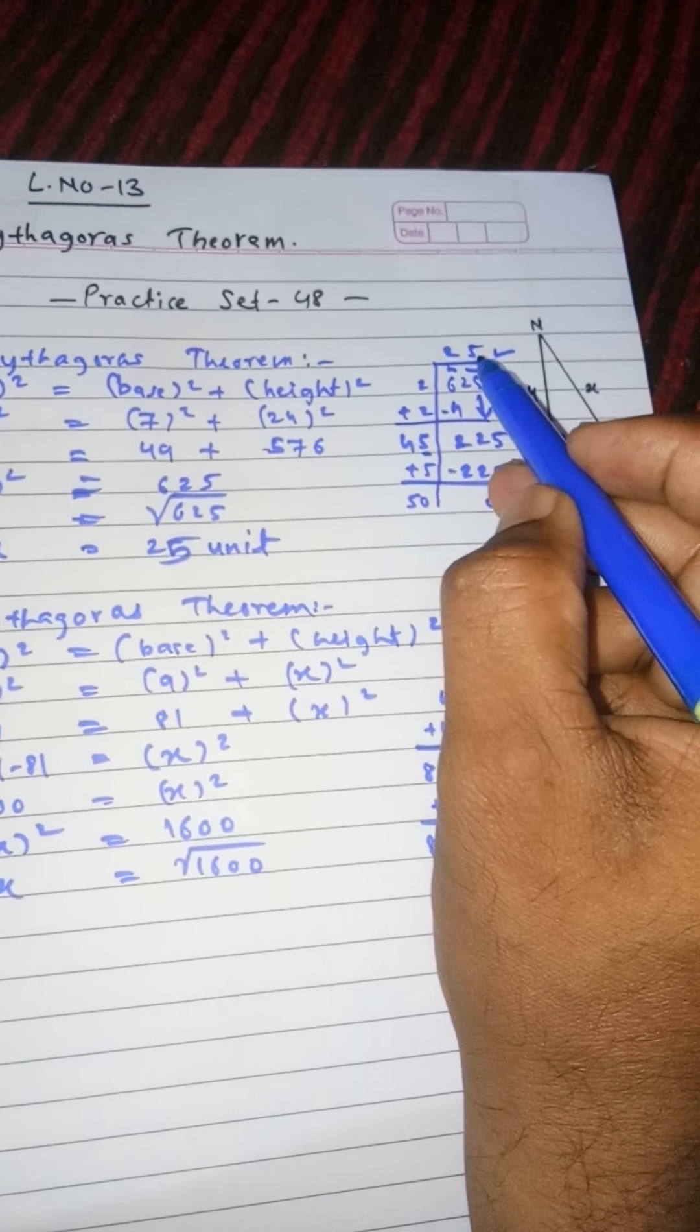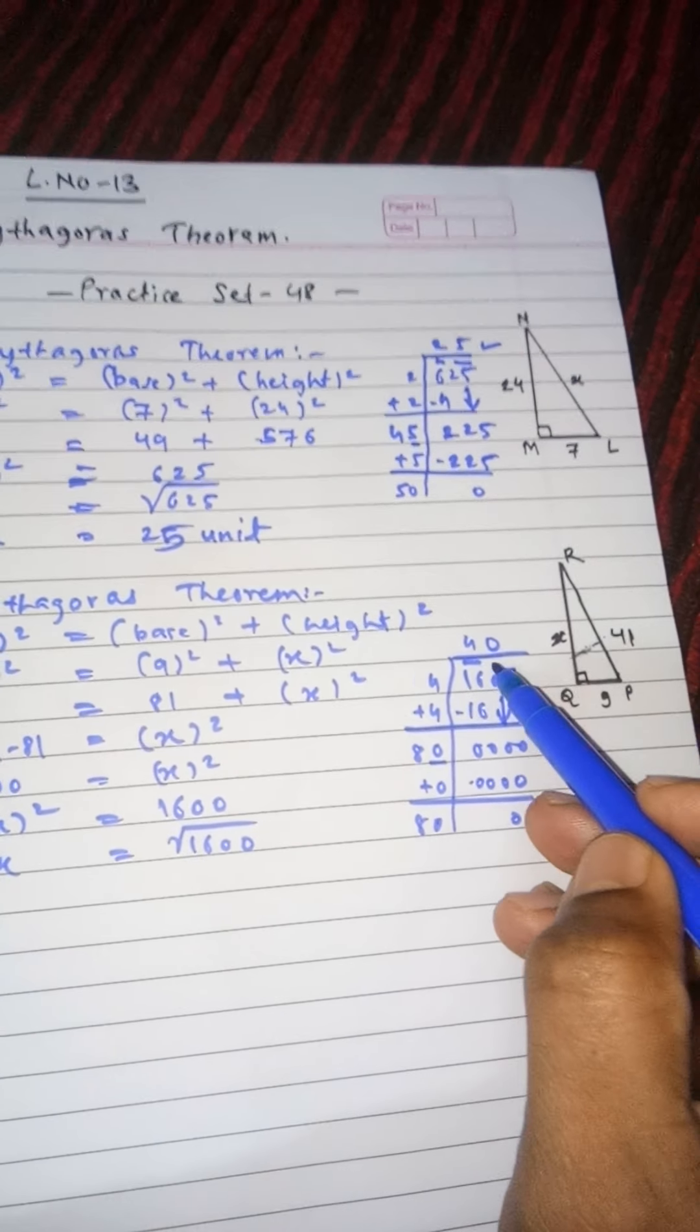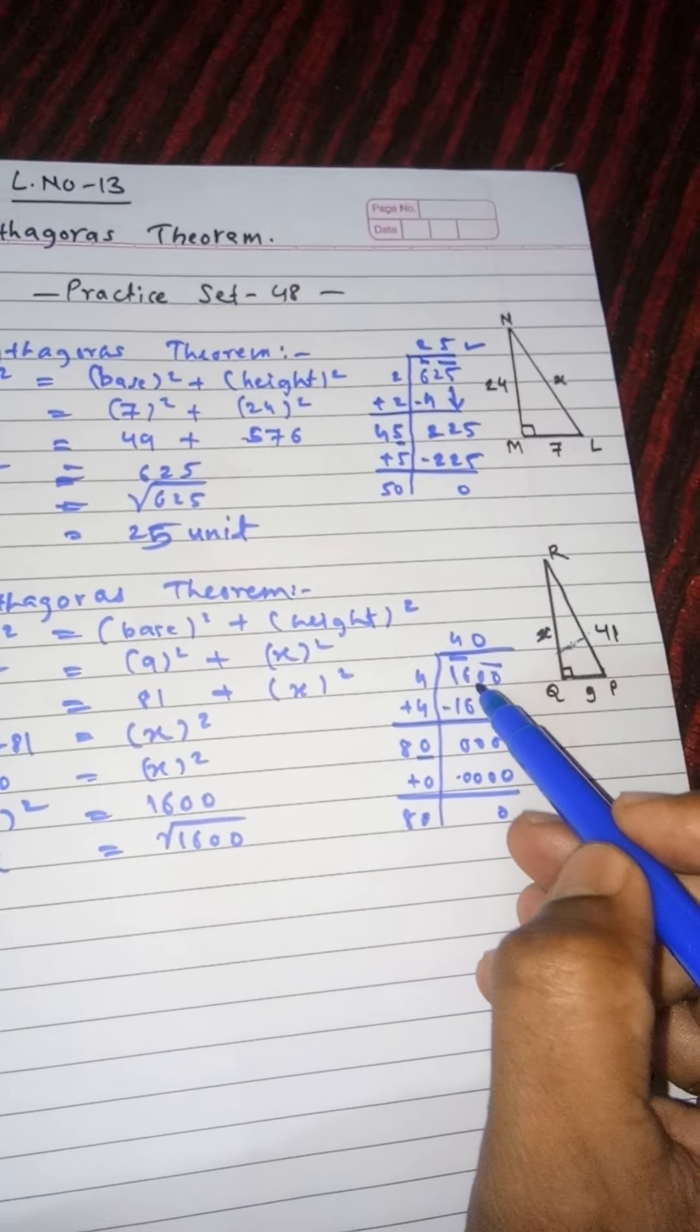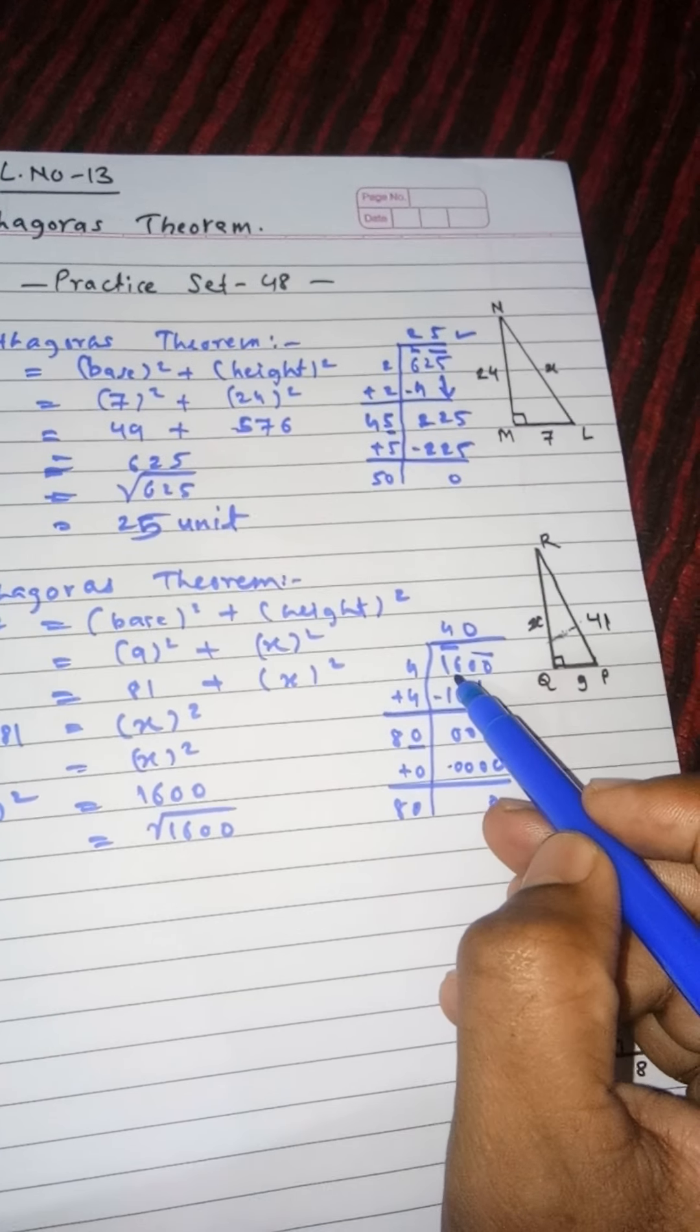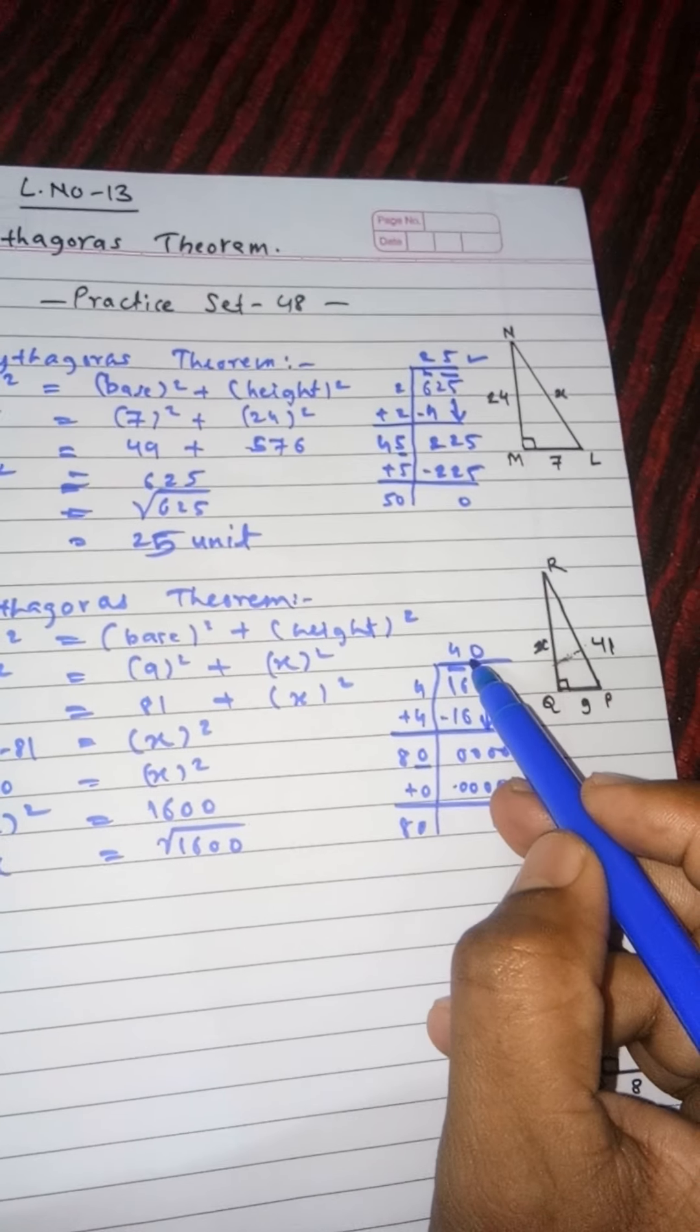40 is our answer and the double of 40 is 80. In the previous example also we have seen 25 was our answer and the double of 25 is 50 for the verification purpose. Here also 40 is the answer and the double of 40 is 80. So square root of 1600 is 40.